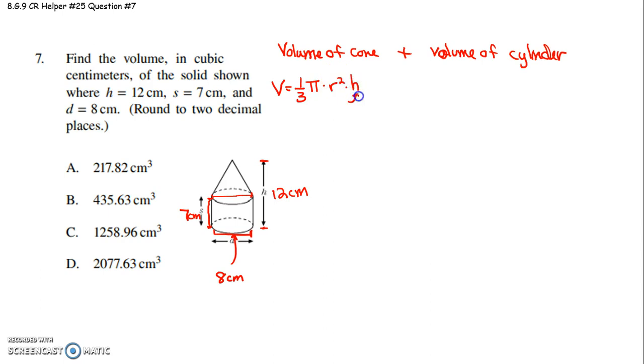h here will be the height of the cone. r, for this case, will be the radius of the cone. The radius of the cone and the cylinder will match because those circular bases fit right on top of each other.